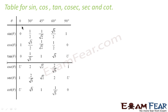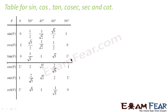Sin 0 is 0. Sin 30 degree is 1 by 2. Sin 45 is 1 by root 2. Sin 60 is root 3 by 2. Sin 90 is 1. For cos — cos 0 degree is 1, cos 30 is root 3 by 2, cos 45 is 1 by root 2, cos 60 is 1 by 2, cos 90 is 0. For tan — tan 0 is 0, tan 30 is 1 by root 3, tan 45 is 1, tan 60 is root 3, and tan 90 is undefined. Similarly, we have cosec, sec, and cot.